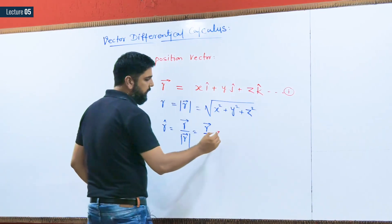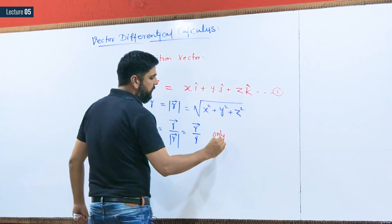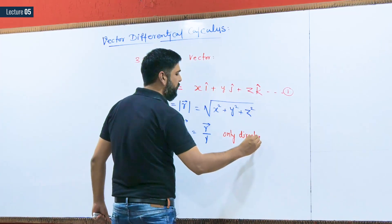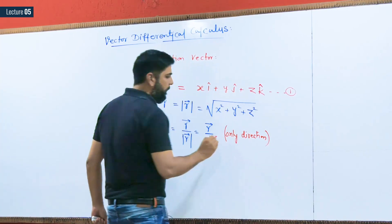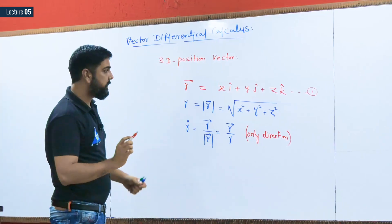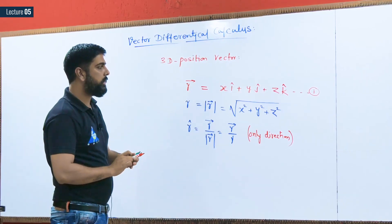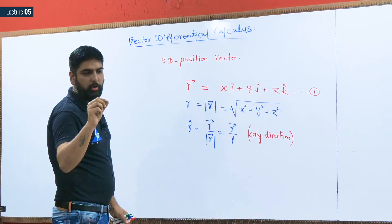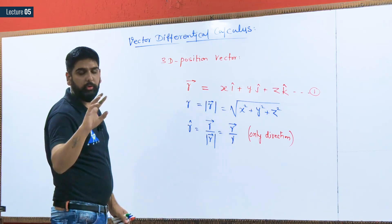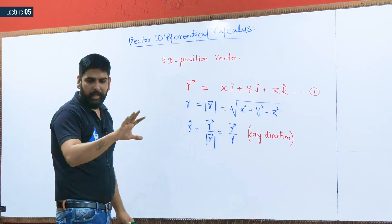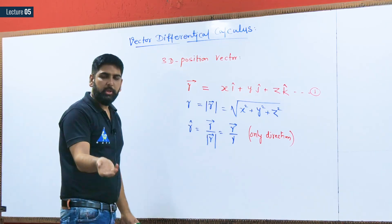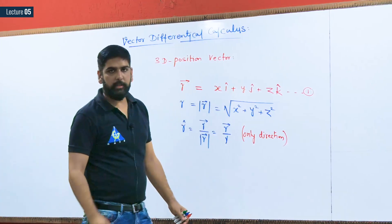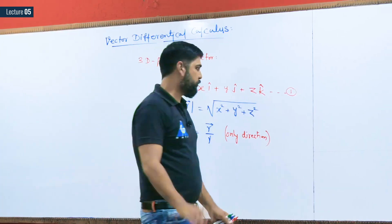R-cap gives only direction with no magnitude. I am using R because in IIT or GATE question papers you will directly see R written, which means nothing but x i plus y j plus z k.